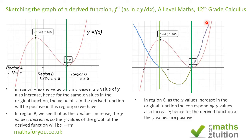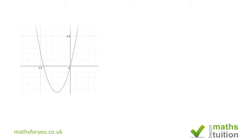This continuous curve — shown in purple, green, and blue — forms the graph of the derivative. Now here's another example: in this case we've got a parabola, given the generic name of y is equal to a function of x.